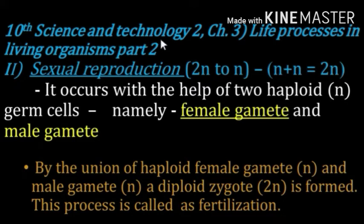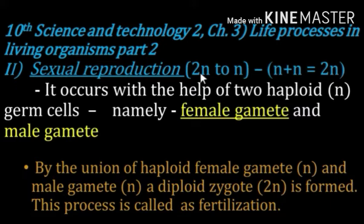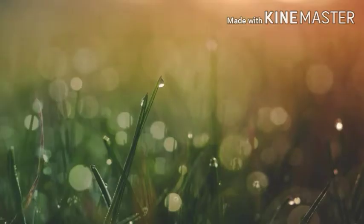Standard 10th Science and Technology Part 2, Chapter 3: Life Processes in Living Organisms Part 2. In this chapter we are going to study sexual reproduction. The 2N number of chromosomes present in the parental cells are reduced to half, producing haploid gametes. When the haploid gamete from the male and haploid gamete from the female unite, they form again a 2N diploid condition in this cell.